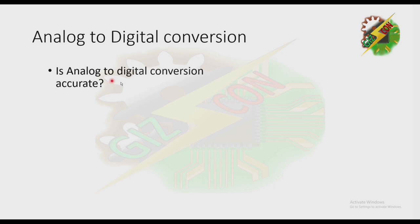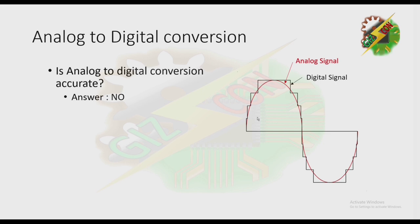We have a question here: is analog-to-digital conversion accurate? The answer is no. As you can see, this is an analog signal and this one is the digital signal. Sometimes the digital signal is not equivalent to the analog signal — there is an inaccuracy. Because of that, the analog-to-digital conversion is not accurate.